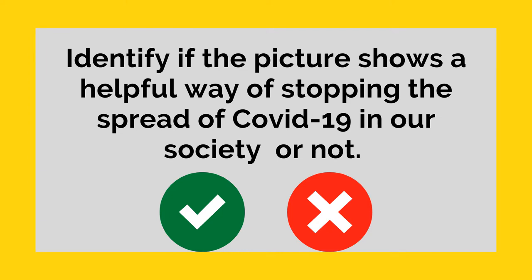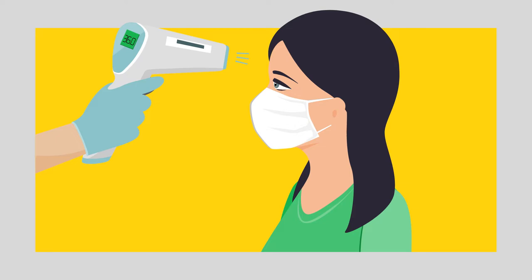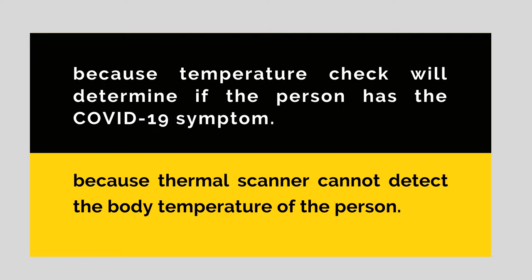Let us first have a short activity. Identify if the picture shows a helpful way of stopping the spread of COVID-19 in our society or not. Then, pick out a statement that supports your answer. Here is the first picture. Do you think this picture shows a helpful way of stopping the spread of COVID-19? Is it because the temperature check will determine if the person has the COVID-19 symptom? Or because the thermal scanner cannot detect the body temperature of the person?